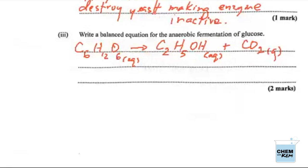We'd also get CO2. To balance: we have 6 carbons on the left, so we need 2 here for the ethanol, making 4 carbons from ethanol — then we put 2 in front of the CO2, which gives us 6 total. For hydrogen: 2 × 5 = 10, plus 2 × 1 = 2, giving us 12. For oxygen: 2 × 1 = 2 from ethanol plus 2 × 2 = 4 from CO2, giving us 6. Everything checks out, so that gives us our full marks. We have 5 marks already — let's go for the other 10.